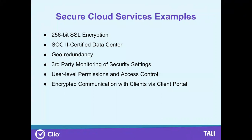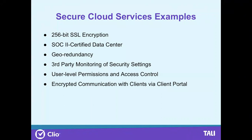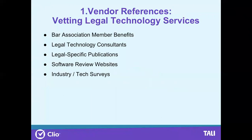For example, Clio uses 256-bit SSL encryption. They also have geo-redundancy so your data is not stored in just one place — protecting against environmental problems like earthquakes. They have different user-level permissions, which we'll go into in more detail. And they have secure client portals — Clio Connect — which allows clients to use a more secure outside portal for communicating. Now back to Matt on vendor references.